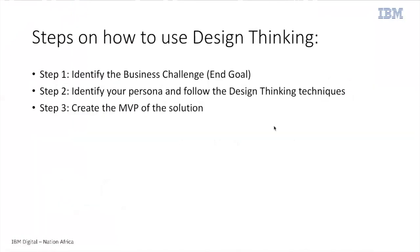Now I'm going to give you an end-to-end example showing the three major steps and how they relate to observe, reflect, and make. The first step is identifying the business challenge. The second step is identifying our persona and following the design thinking techniques to understand our target audience. The third step is creating the MVP — Minimum Viable Product — of the solution, meaning we come up with a real outcome that includes only what is necessary for our end users.